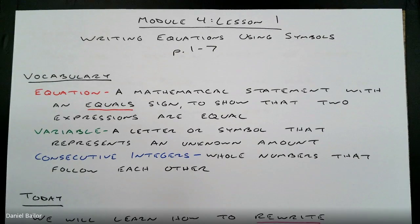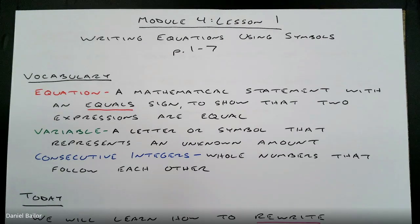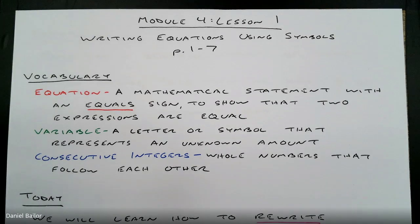Our final vocabulary word is consecutive integers. Consecutive integers are whole numbers that follow each other. An integer is a whole number; consecutive just means in order. Like 1, 2, 3 are consecutive integers, and so are 17, 18, 19 or 135, 136, 137. They are all whole numbers that go in order. It's very important that you know what they mean when you see them.